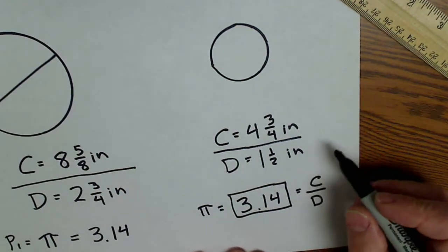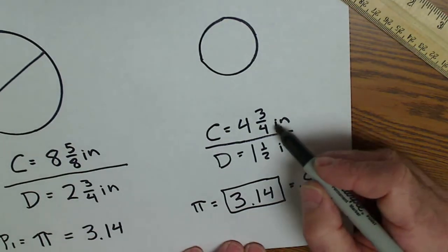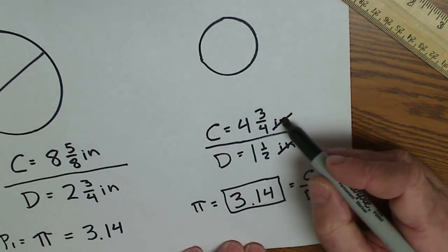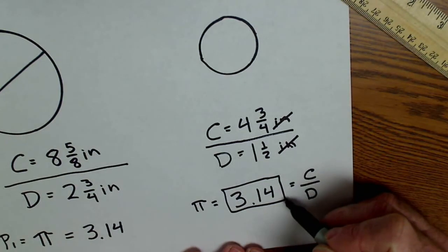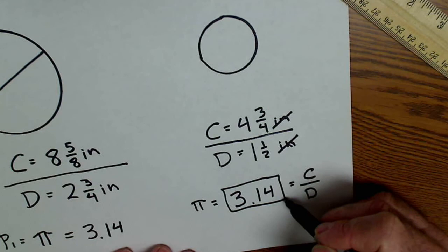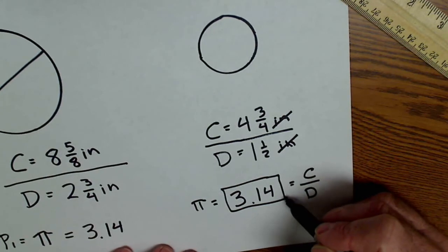Another really important thing happens here. And that is that the units cancel. So inches cancel with inches. And this number, pi, is unitless. And we're going to use that in our next lesson of Hunter's Top.